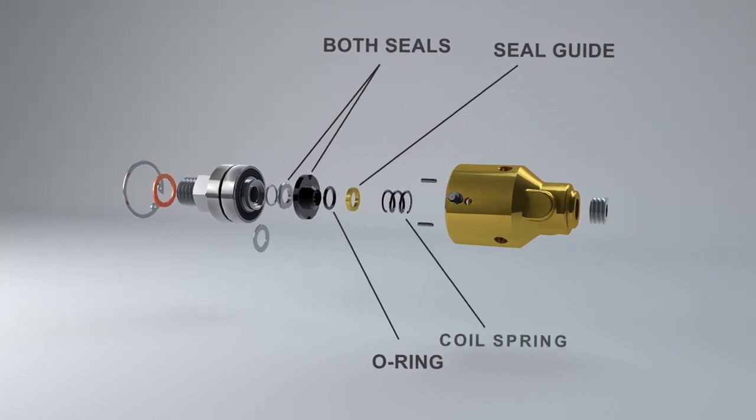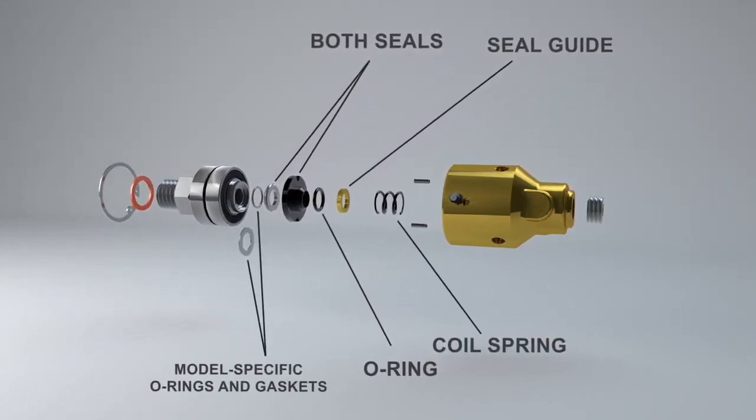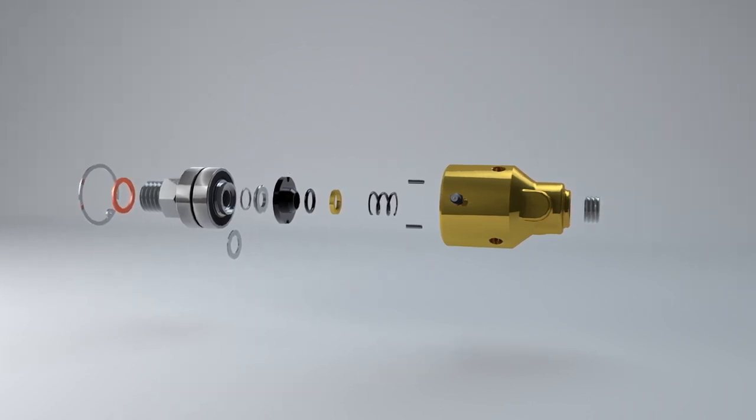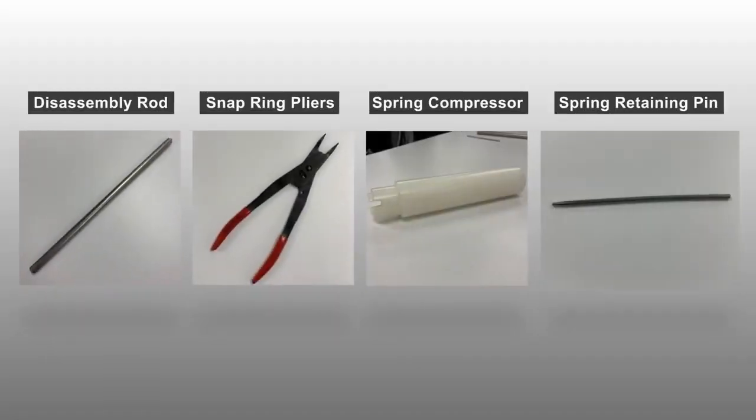This video will guide you step by step through instructions to disassemble and reassemble rotary unions with replacement C kit parts. Please note that tooling used and described in the disassemble and reassemble process are not included in the service kits.